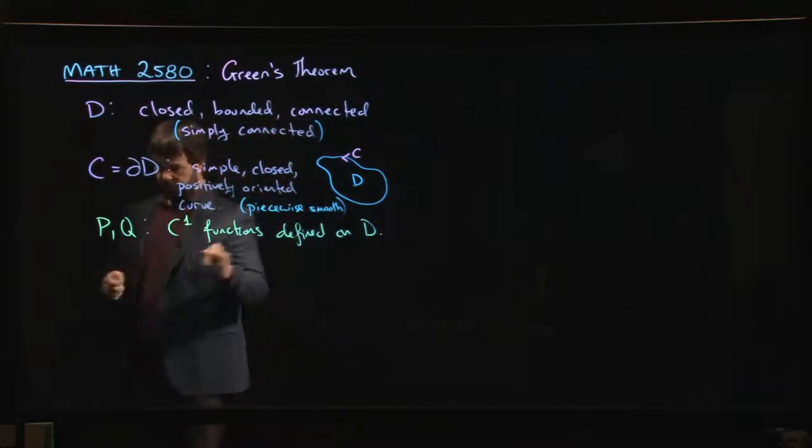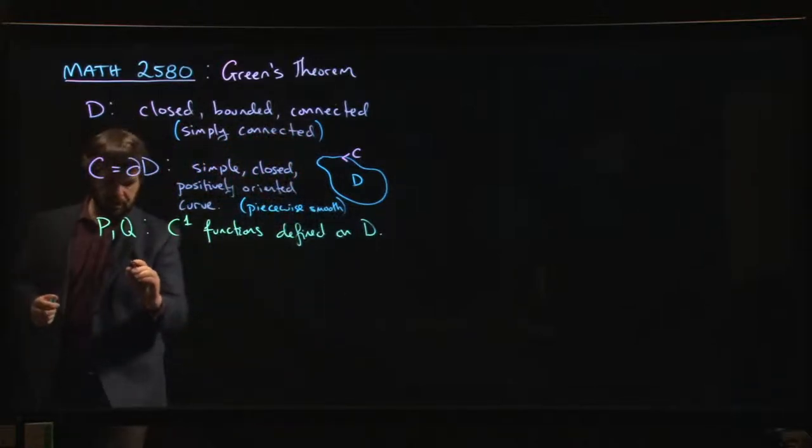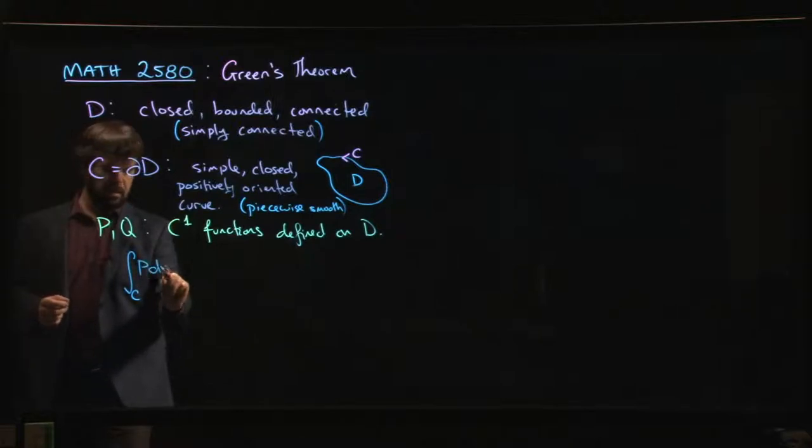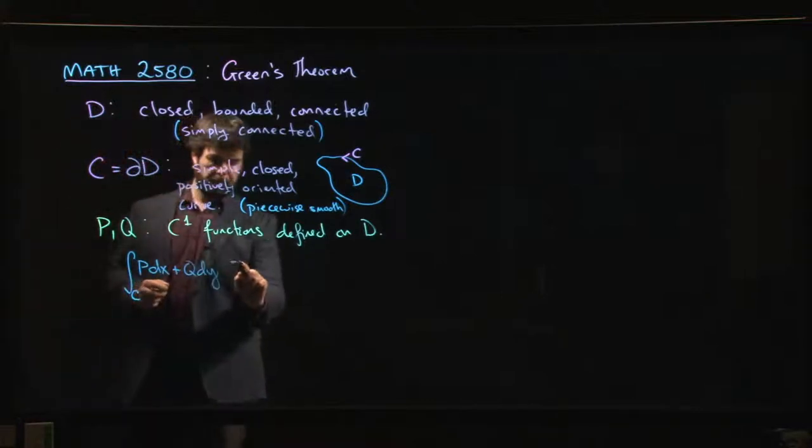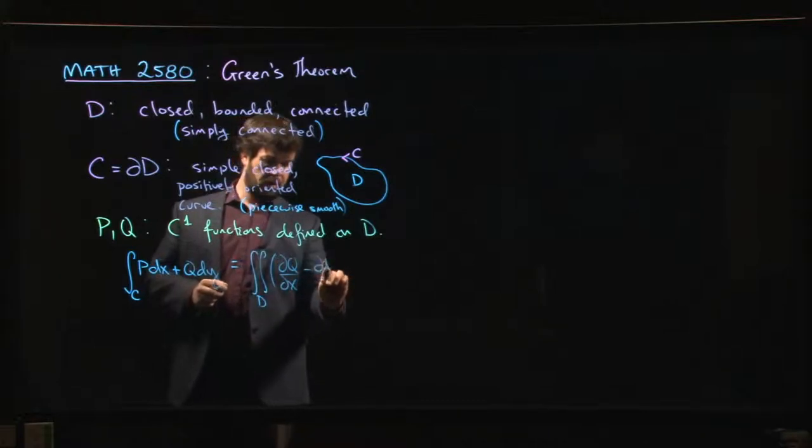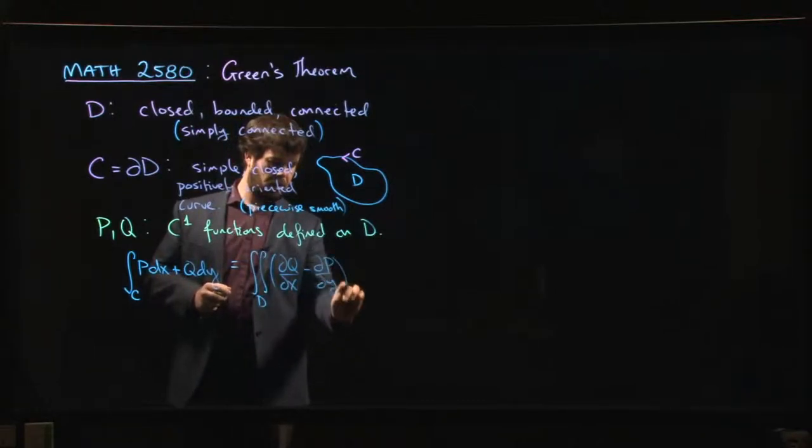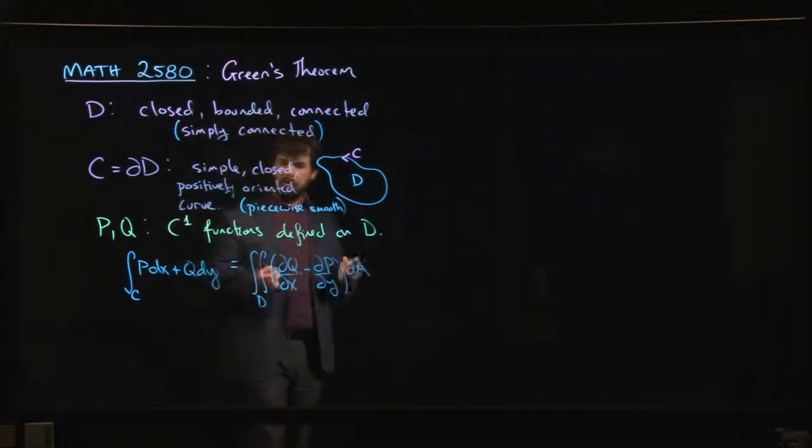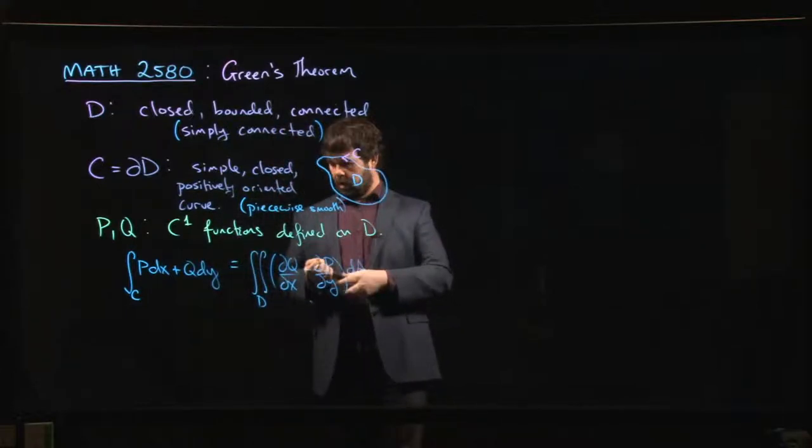With all these conditions, Green's theorem says that the integral around C, this integral around this closed loop of P dx plus Q dy, is equal to the double integral over D of dQ/dx minus dP/dy, integrated with respect to area. That's what Green's theorem states.